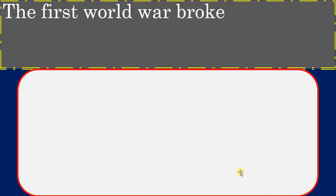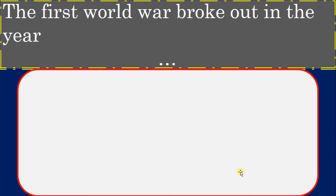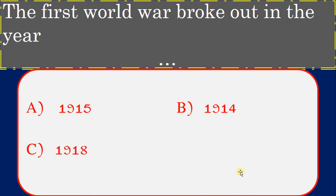The First World War broke out in which year? Options: 1915, 1914, 1918, 1920. Correct answer: 1914. Option B is correct.